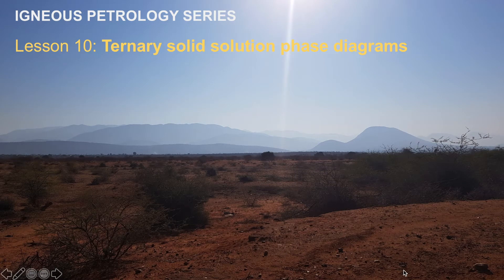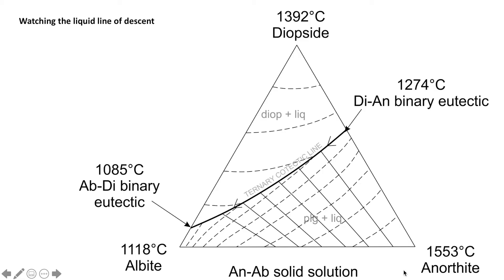Hello everybody and welcome to lesson 10 of the igneous petrology series. In this lesson I'm going to be talking about ternary solid solution phase diagrams. Solid solution essentially refers to one mineral whose composition changes with the evolving composition of the liquid, such as the example of plagioclase feldspar which evolves from a calcium-rich end member of anorthite to a sodium-rich end member of albite.